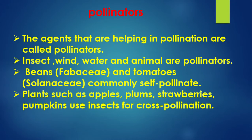Pollinators: The agents that help in pollination are called pollinators. Insects, wind, water and animals are pollinators. Plants such as beans (family Fabaceae) and tomatoes (family Solanaceae) commonly self-pollinate. Plants such as apples, plums, strawberries and pumpkins use insects for cross-pollination.